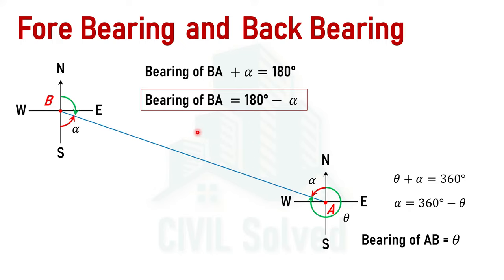This is how the back-bearing of different lines can be calculated when the fore-bearings are given in the whole circle bearing system. We have discussed each case: when the line lies in the northeast, southeast, southwest, and northwest quadrant. That's all from this video. I hope to see you in coming videos. Thank you for watching.